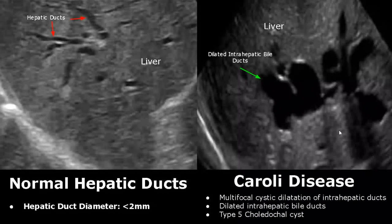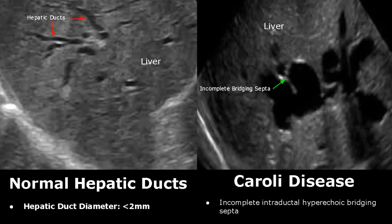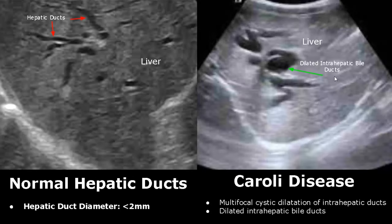Caroli disease is also congenital. There is multifocal cystic dilatation of the intrahepatic ducts, meaning these bile ducts are dilated at multiple locations. It is a type 5 choledochal cyst. Another feature of Caroli disease is the incomplete intraductal hyperechoic bridging septa. Here is another image of Caroli disease with cystic dilatation of intrahepatic ducts.